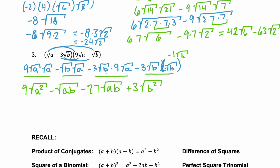Let's keep going left to right and simplify. The coefficient stays as 9, and the square root of a squared is a. Notice the next two terms: they're like radicands — they have the same index (both square roots) and the same radicand ab — so we can combine them. Negative 1 and negative 27 gives negative 28 square root of ab. And then our last term has a coefficient of 3, and the square root of b squared is just b. So this simplified to 9a minus 28 square root of ab plus 3b.